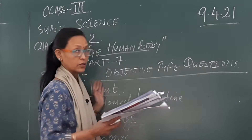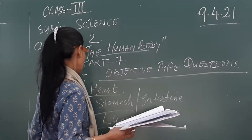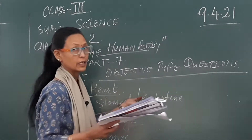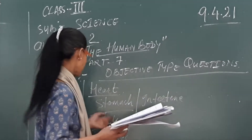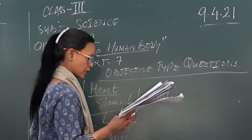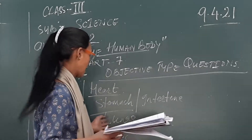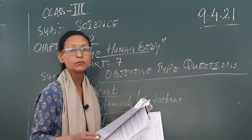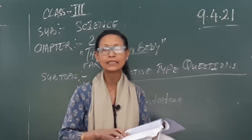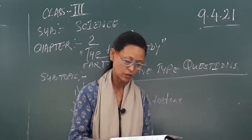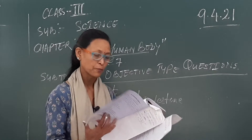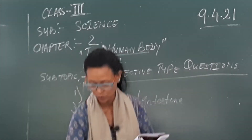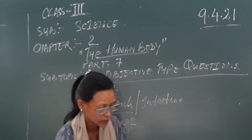So the answers are: number one — circulatory system: heart; number two — digestive system: stomach or intestine; number three — respiratory system: lungs; number four — skeletal system: bones. We are finished with Part One. Now we will move on to Part Two.